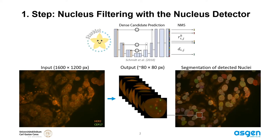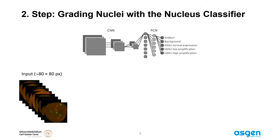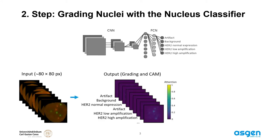The extracted nuclei are given to subsequent networks such as the nucleus classifier. This component is based on a customized VGG-like CNN for classifying single nucleus images into five different classes: HER2 normal, low amplification, and high amplification as HER2 grading classes, plus artifact and background as filter classes. The filter classes prevent images containing none or more than one nucleus from being classified into HER2 grading classes. We also generate corresponding class activation maps to gain insight into which features were used for classification.